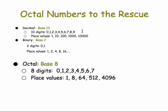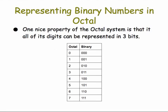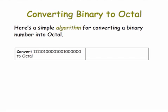One common base that computers use is base 8 numbers, which are called octal. Base 8 numbers have 8 digits, 0 through 7, and their place values are all powers of 8: 1, 8, 64, 512, and so forth. One really nice property of octal numbers is that all of their digits, 0 through 7, can be represented in 3 bits — from 000 to 111. And this gives us a nice way to convert binary into octal.